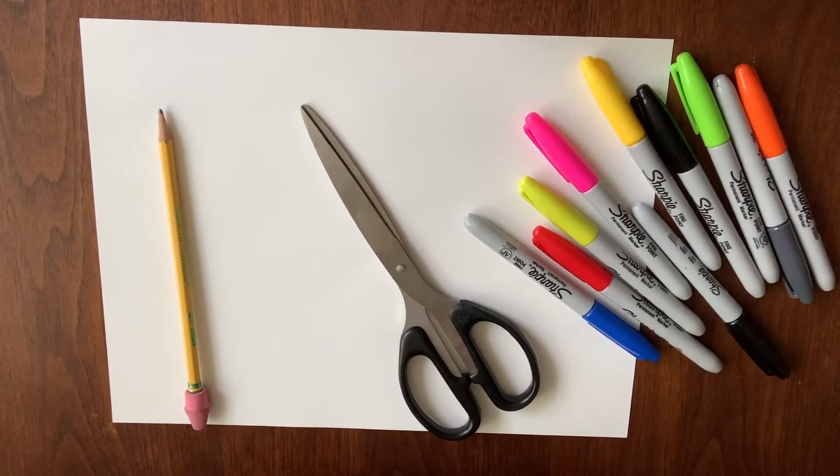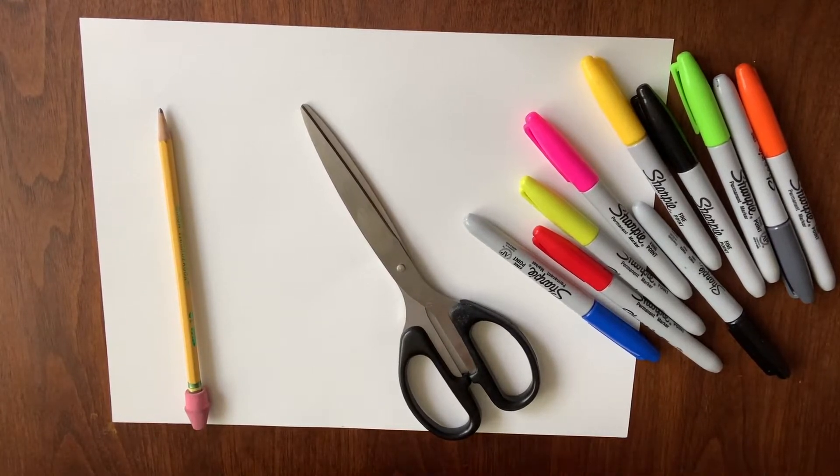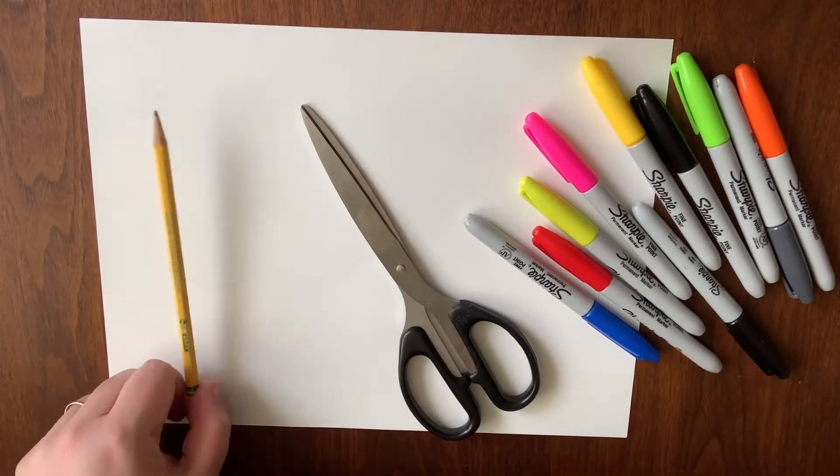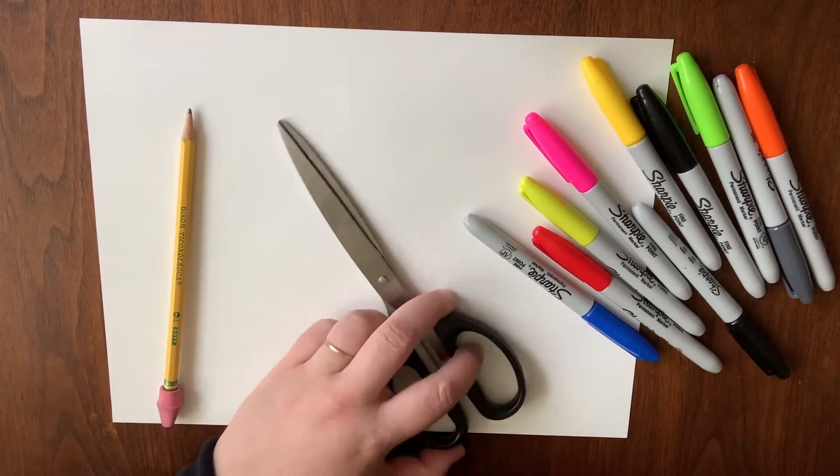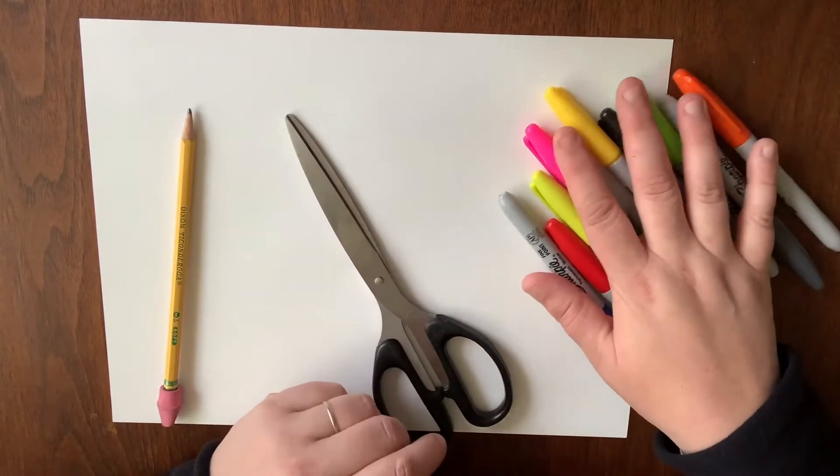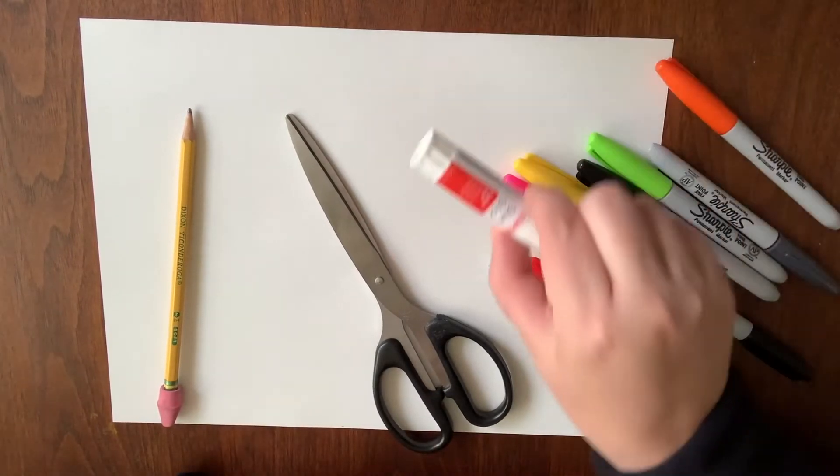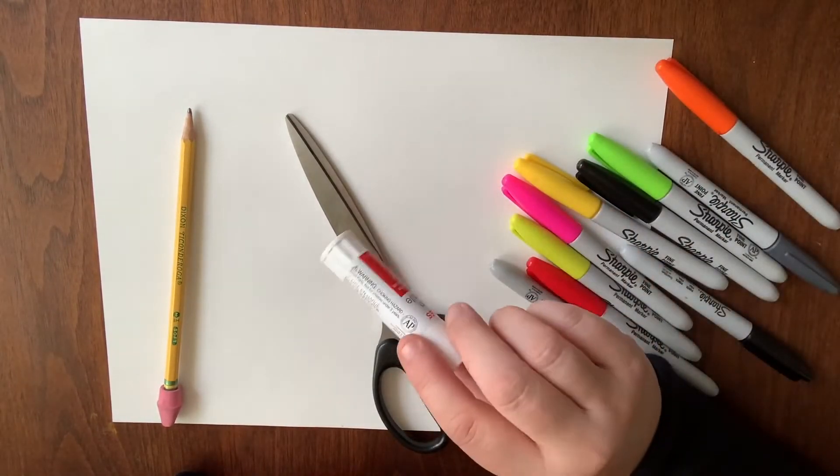Hello! Today we're going to learn how to make a book from a single sheet of paper. Your materials are things that you can find around the house. Today I'm using a pencil, a pair of scissors, some drawing supplies like markers, crayons, colored pencils, and a glue stick if you have it, but that's not necessary.